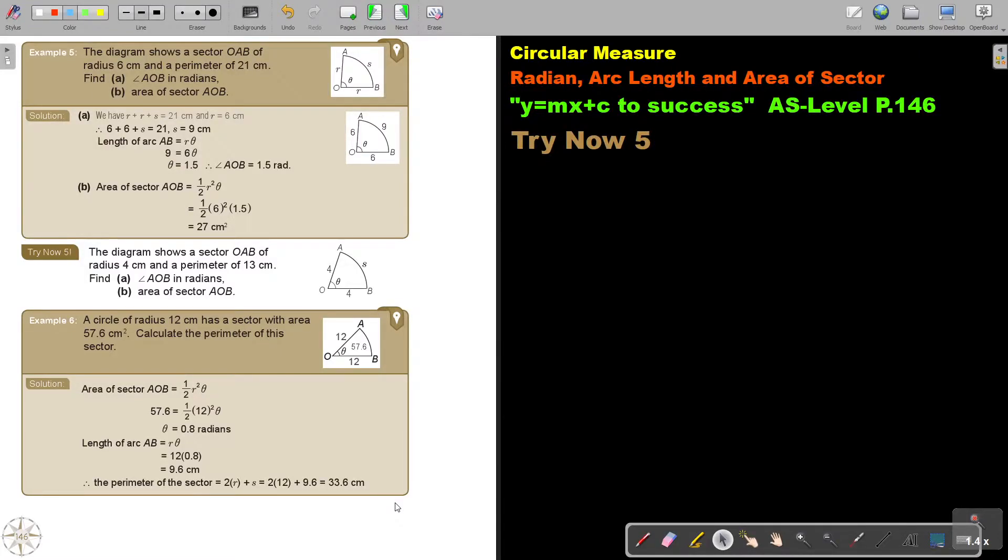In this video, we will continue with the radian, arc length, and area of a sector. You will find this on page 146 in the Namibia AS level mathematics textbook Y equals MX plus C to success.